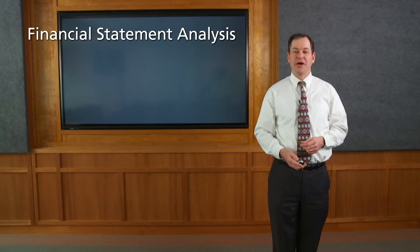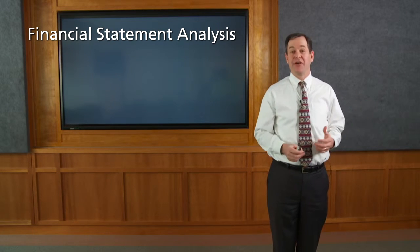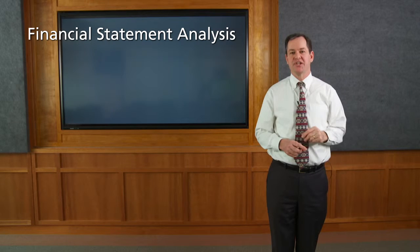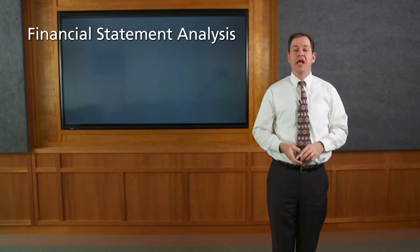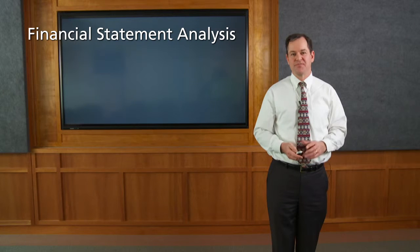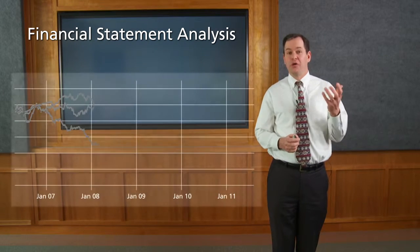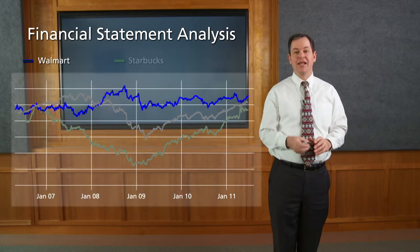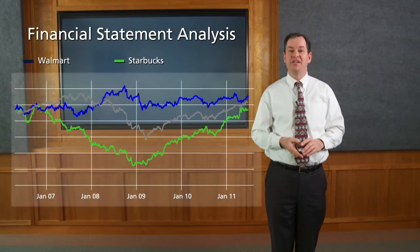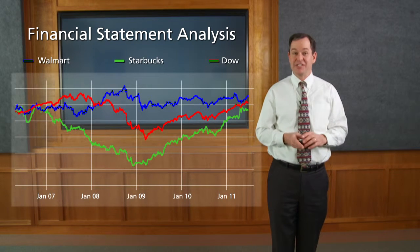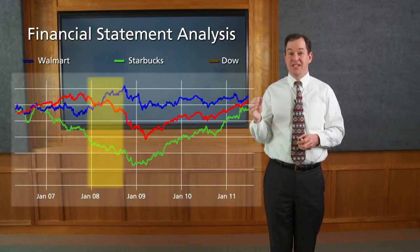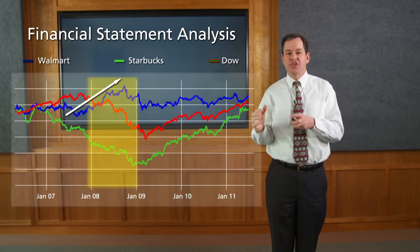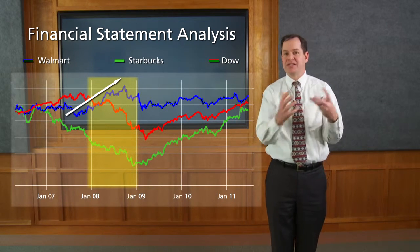Welcome back everyone. Today we're going to talk about financial statement analysis. We've spent a great deal of time talking about the three primary financial statements — the balance sheet, the income statement, and the statement of cash flows. To motivate our discussion, I've got a stock plot of Walmart and Starbucks. On the top we have Walmart, and the bottom green line is Starbucks, with the Dow Jones Industrial Index as comparison. As we entered the recession, Walmart's stock price actually increased considerably as shoppers switched from department stores to buying basics at Walmart.